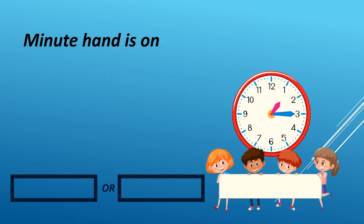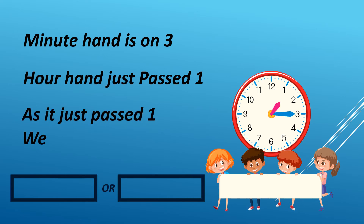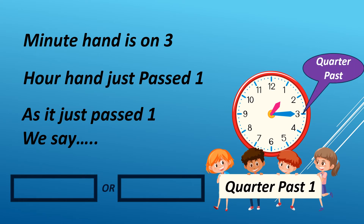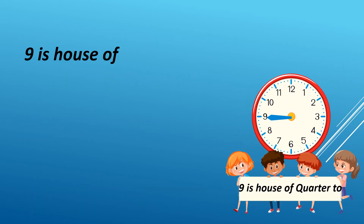When the minute hand is on 3 and the hour hand just passed 1, as it just passed 1, we say quarter past 1. It can either be AM or PM. For example, it is 1:15 AM in 12-hour format. We read it as 115 hours in 24-hour format.